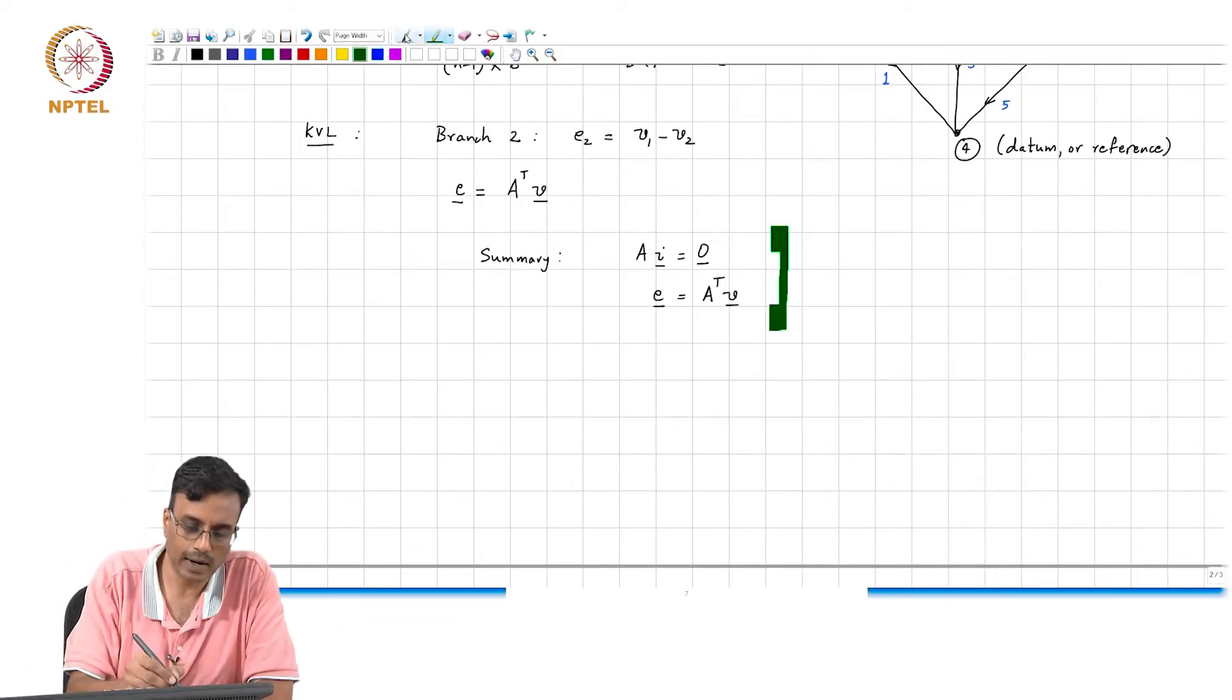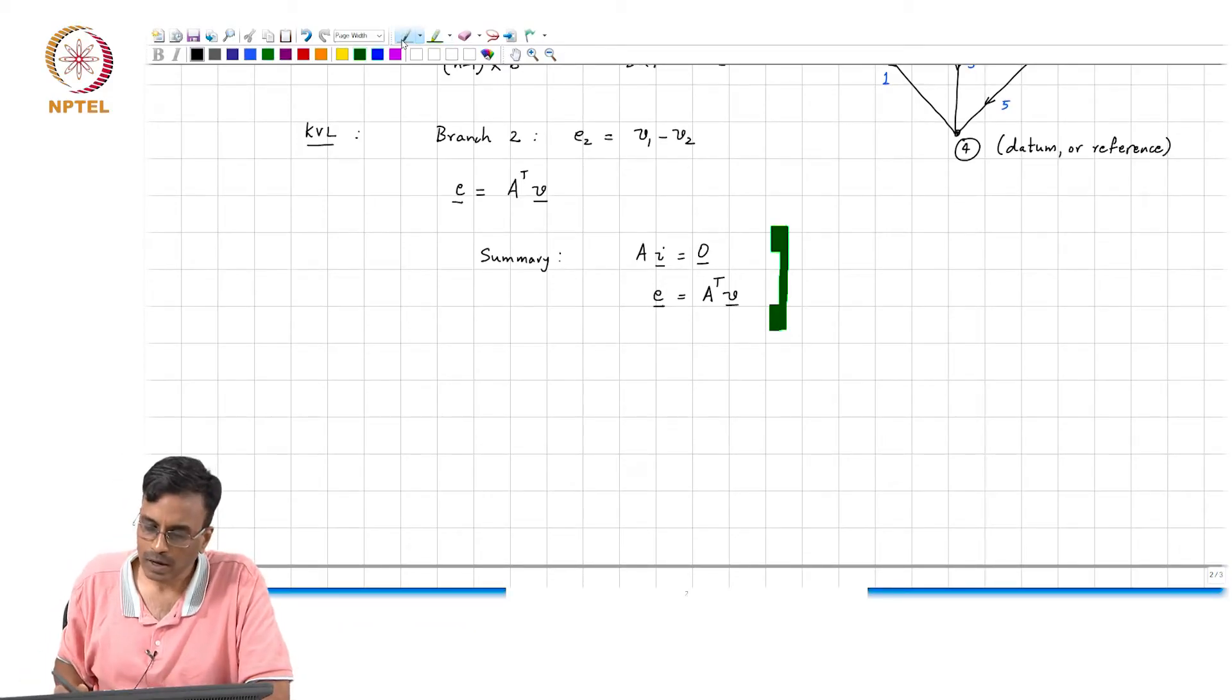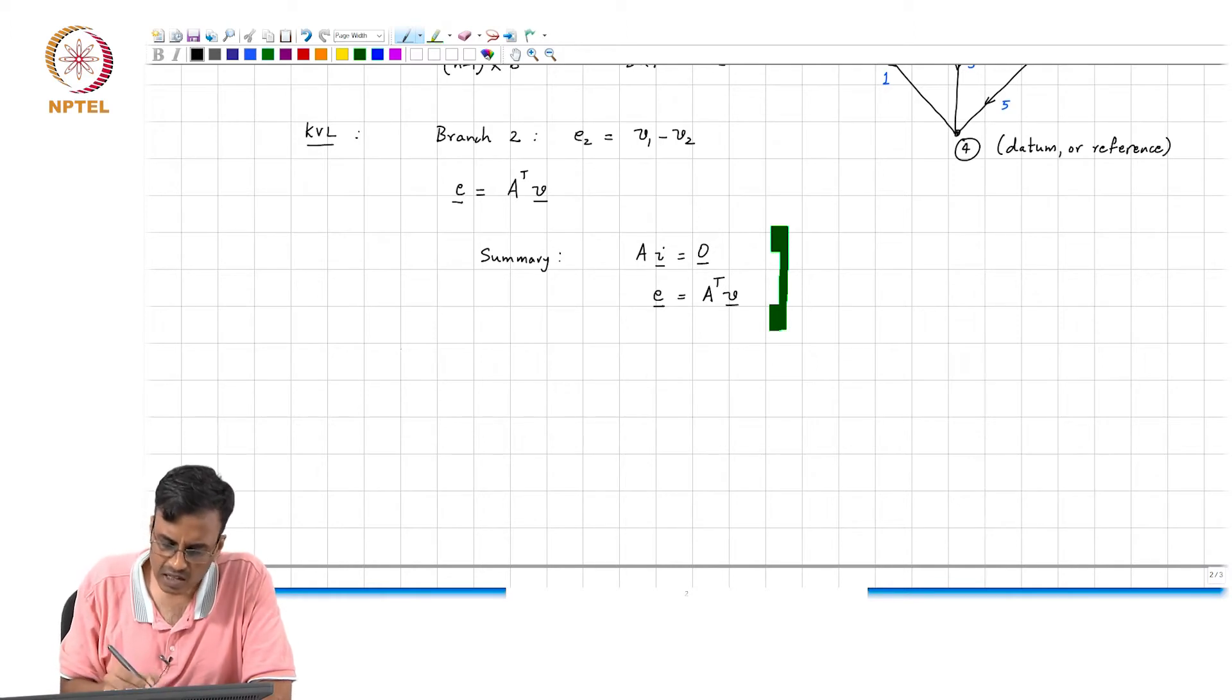One interesting aspect I would like to point out is the following: What interpretation can be given to this product E transpose times I?